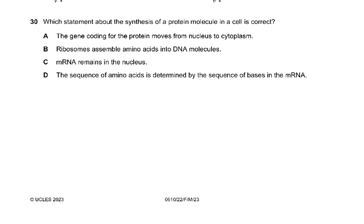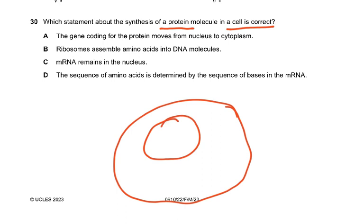Question 30: Which statement about the synthesis of a protein molecule in a cell is correct? Option A says the gene coding for the protein moves from the nucleus to the cytoplasm — no, the gene does not move. Instead, RNA copies the gene and the RNA leaves the nucleus, goes to a ribosome, and is translated into a protein molecule. The answer is D: the sequence of amino acids is determined by the sequence of bases in the mRNA.